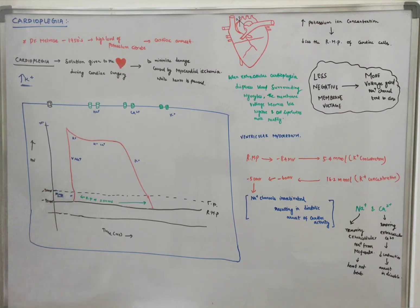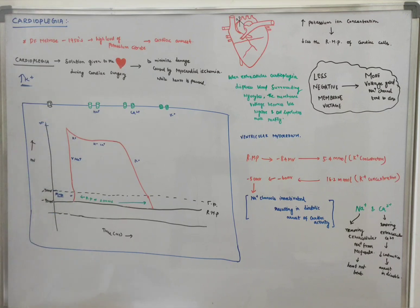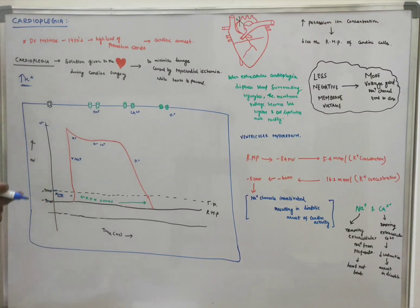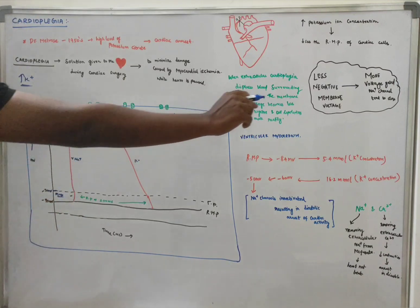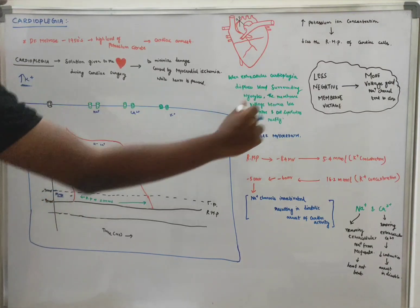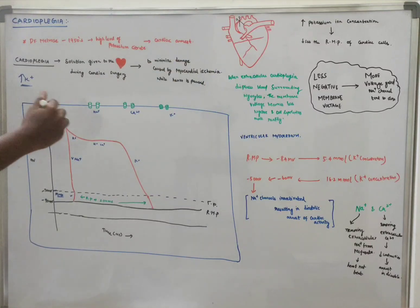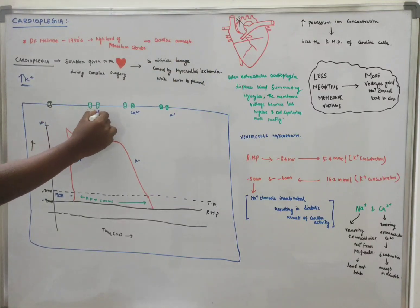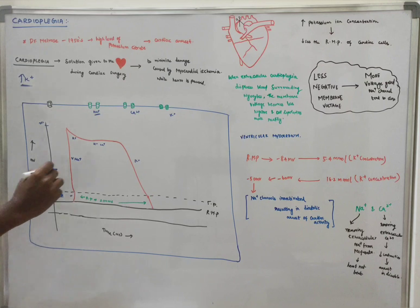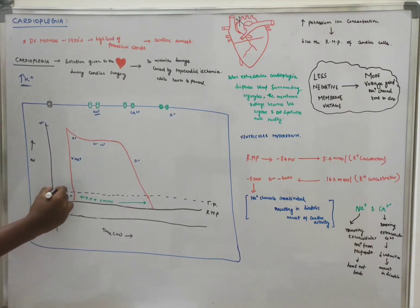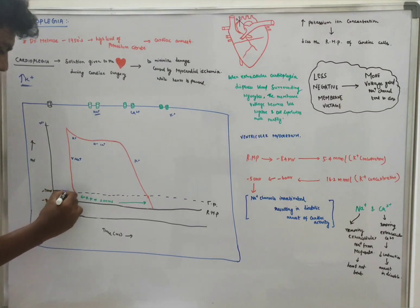Now the resting membrane potential is approximately -71mV. Now with sodium influx, we have a less negative membrane voltage. So more voltage-gated sodium channels tend to close. More voltage-gated channels will be reduced. So the faster depolarization will be reduced. Now we have a little slope instead of a rapid upstroke, and now we are at -70mV.